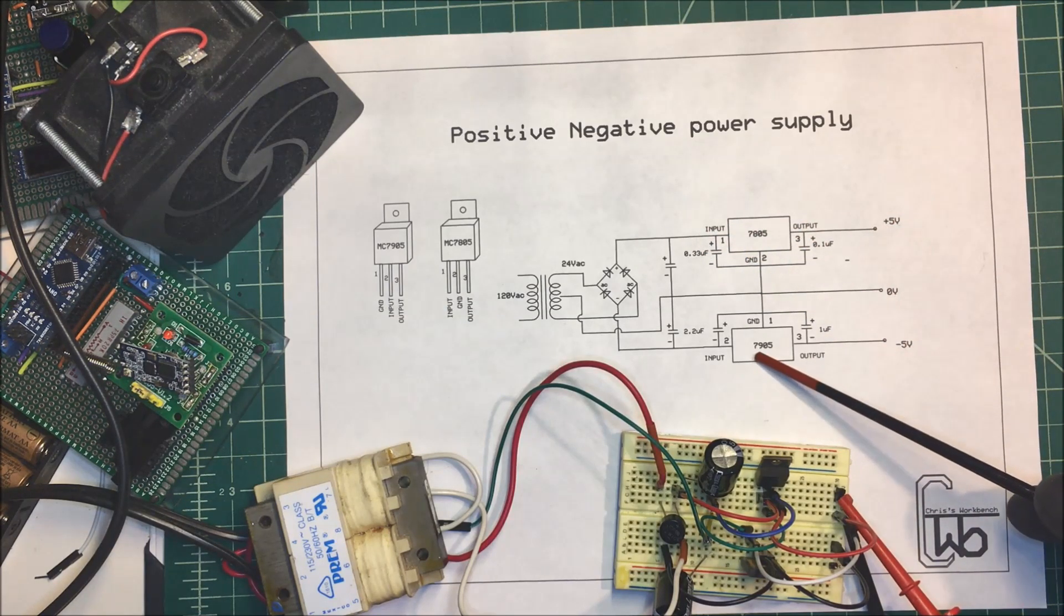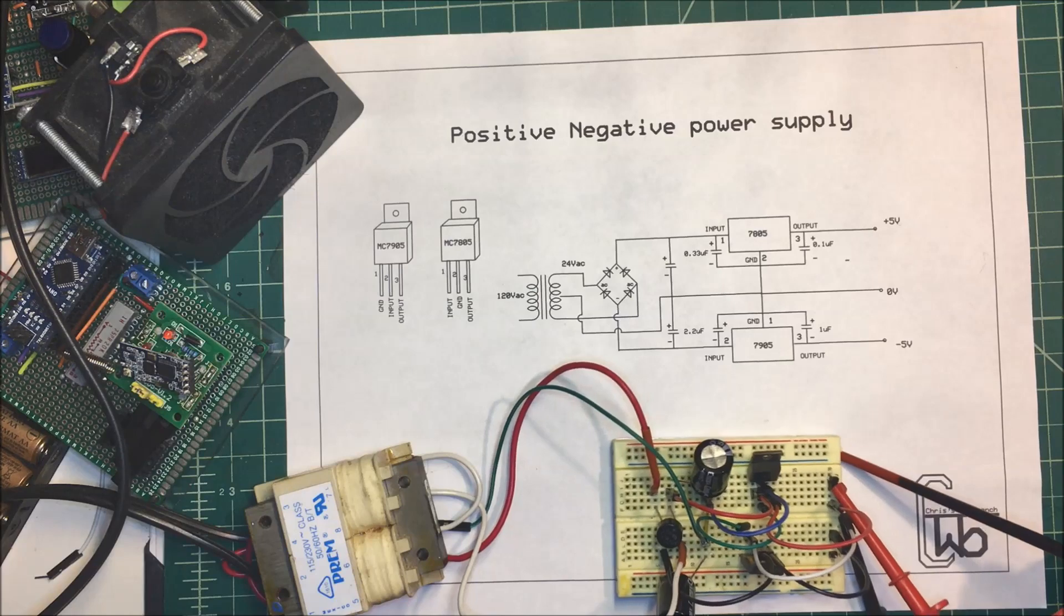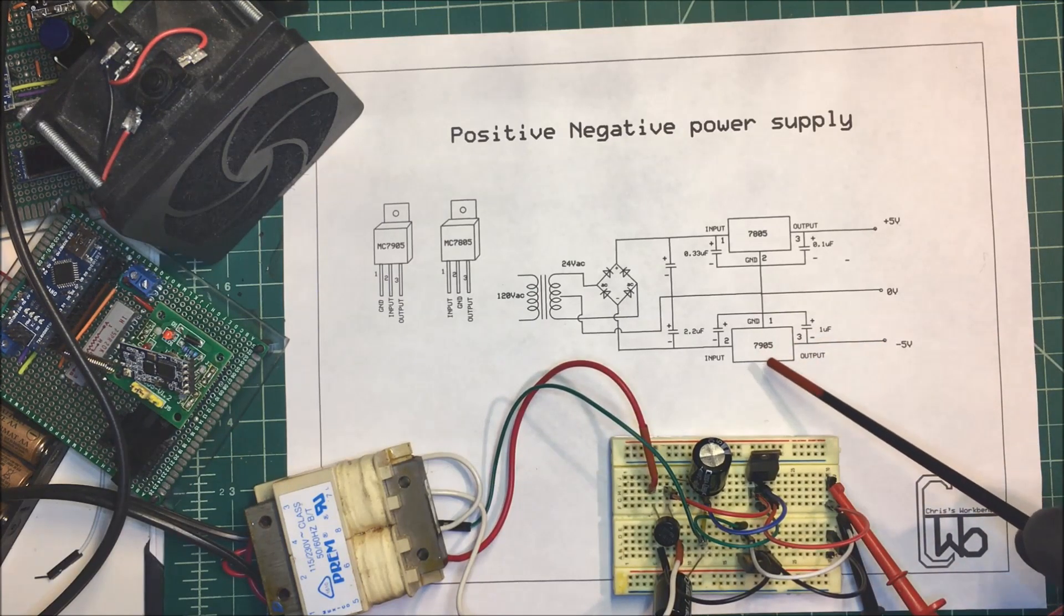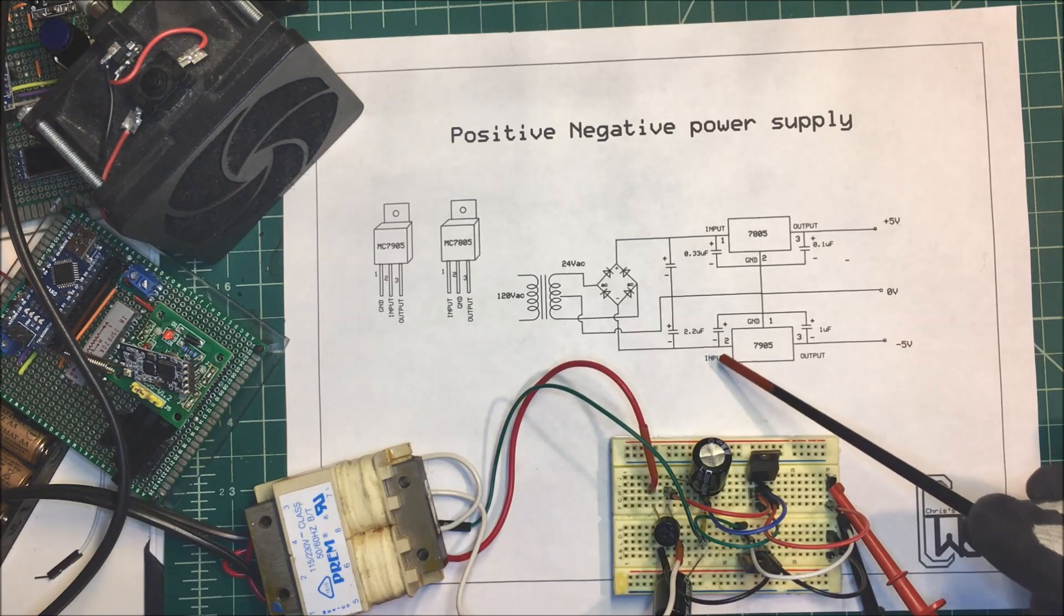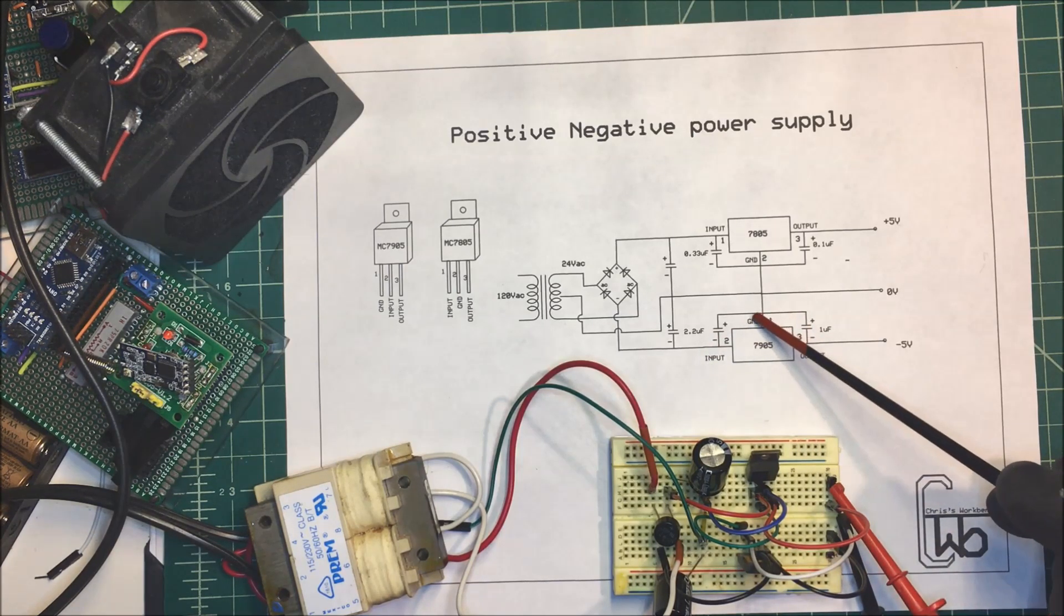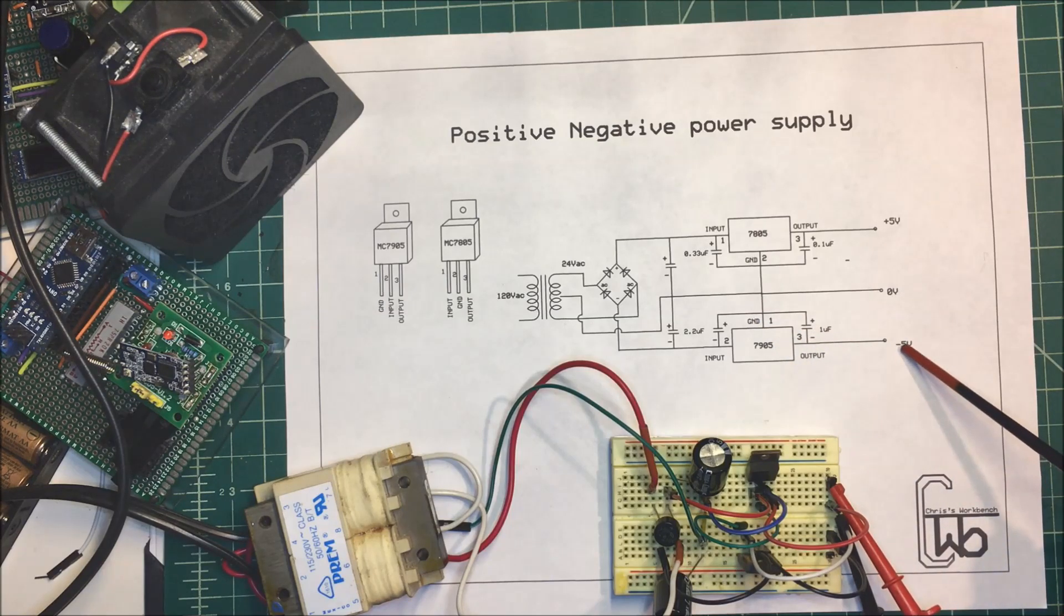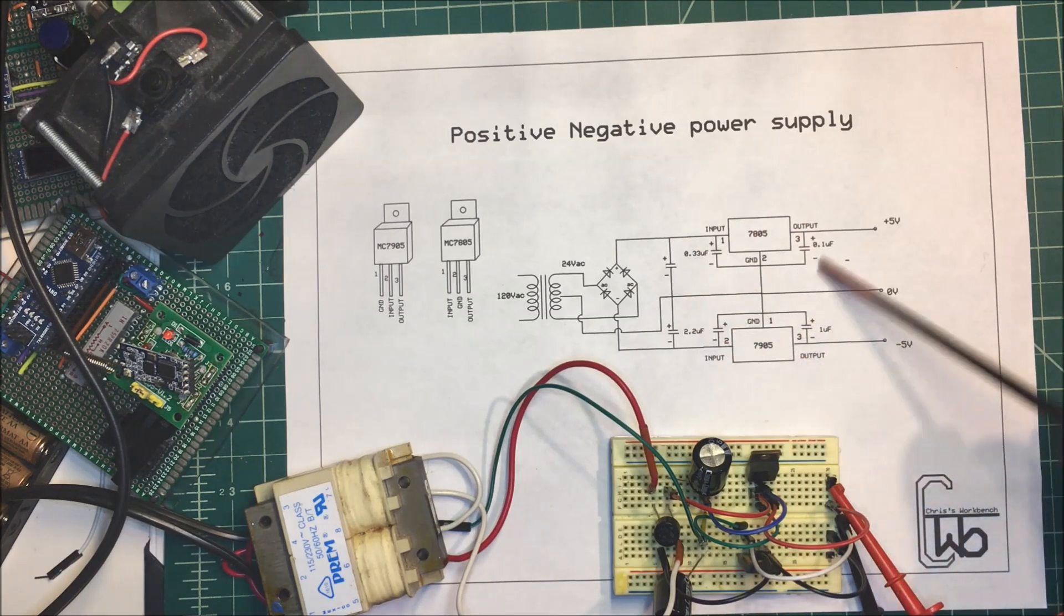Now this one happens to be an MC7905. The 5 is the 5 volts, and the 9 on here says that it's a negative regulator. So if these were just standalone, you'd put the negative side of your battery or power supply over here and you take the ground and put that to the positive side, and then you'd get a negative 5 volts out over here.